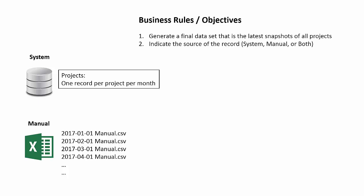Second, we needed to track the source of each project — whether it was from the system, from the manual files, or in some cases both. A project might be in the system and also tracked manually. If it existed in both sources and that was the latest snapshot — say a project existed in March for the manual files and also in the system for March — then we needed to favor the manual data and keep only the manual record, but still know it came from both systems.